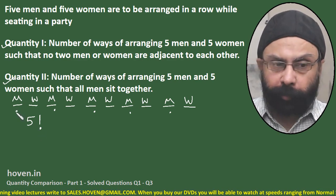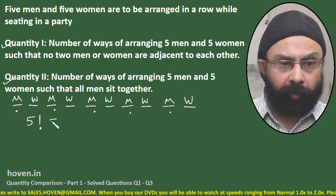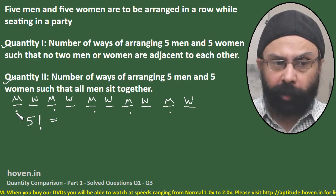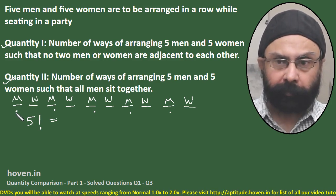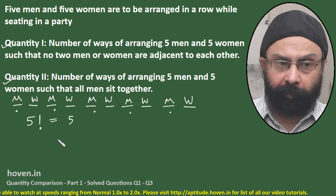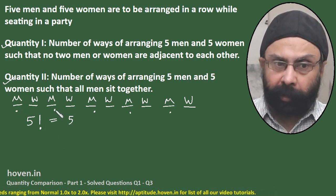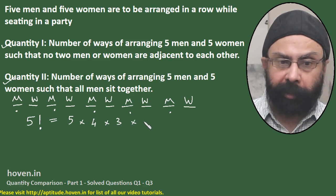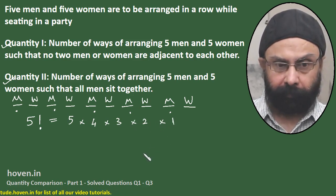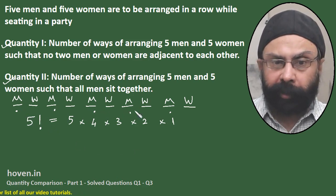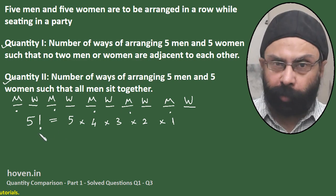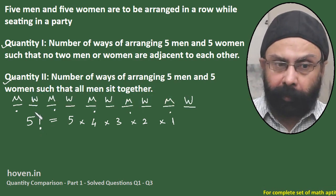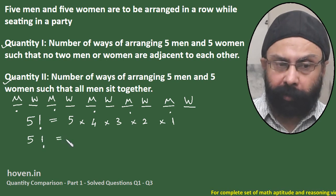So the men can be placed in those alternate seats in 5! ways. By symmetry, women also have 5 factorial arrangements for the remaining positions: 5 women for the first women's seat, then 4, 3, 2, 1. So 5! is the number of ways women can be placed as well.